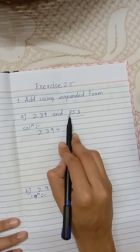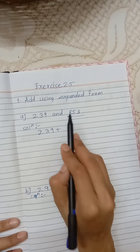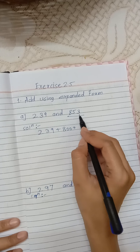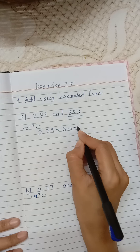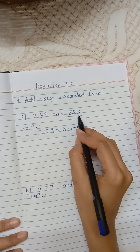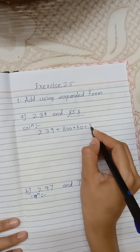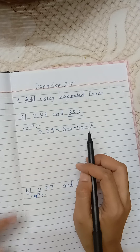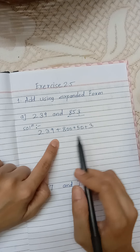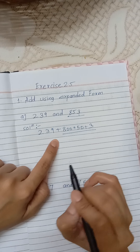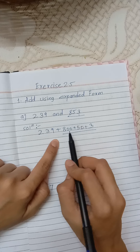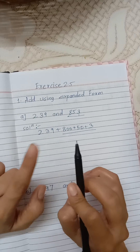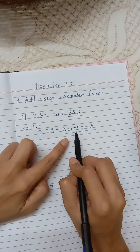So 8 is at the hundreds place, meaning 800. 5 is at the tens place, meaning 50. And 3 is at the ones place, meaning 3. So the expanded form of 853 is 800 plus 50 plus 3. We add this expanded form to 239, giving us: 239 plus 800 plus 50 plus 3.